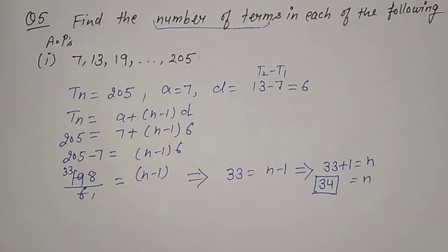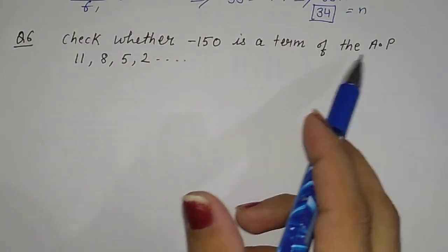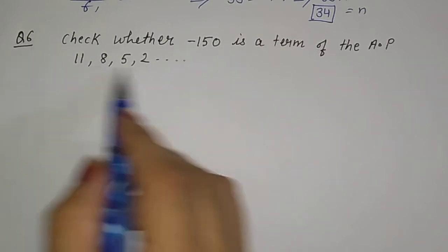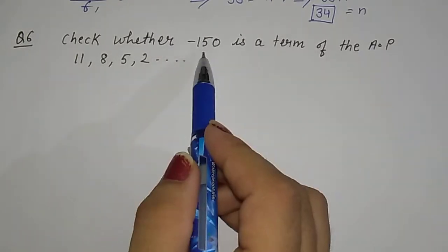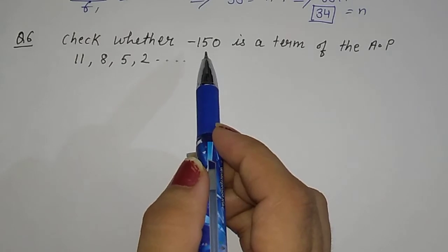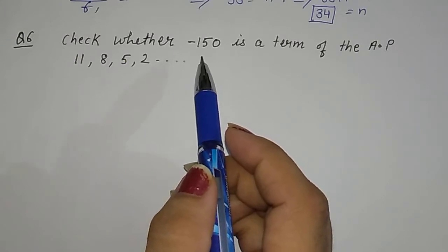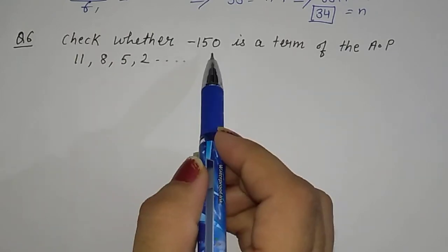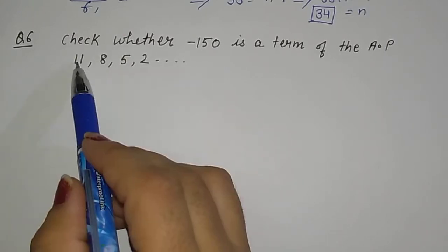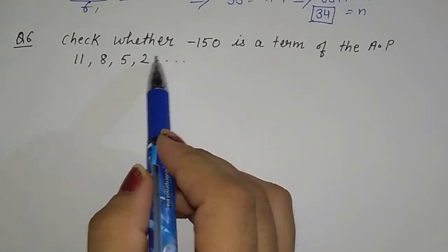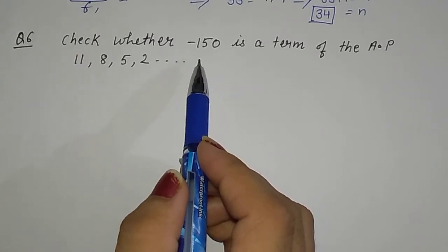Now question number 6. We will check whether -150 is a term of this AP. If we take this term and our value comes out positive, then it would not be part of this AP. The AP 11, 8, 5, 2 is reducing — so negative terms should appear. Let's check.